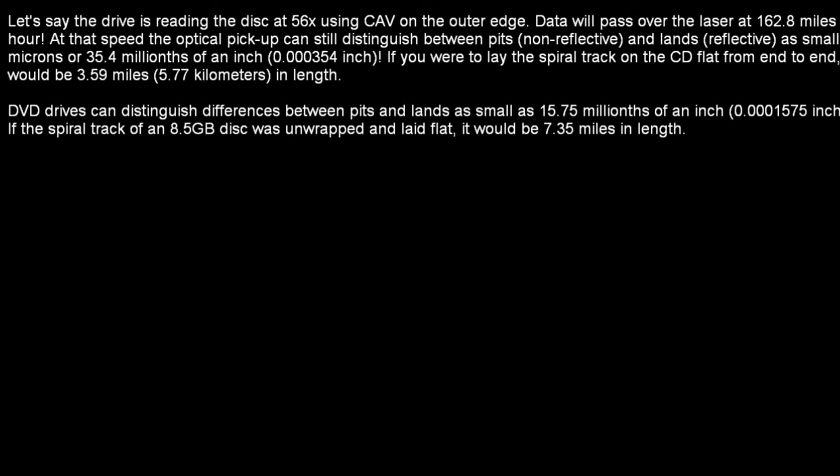Look at DVDs for an example. DVDs can be so accurate that they can distinguish between pits and lands as small as 15 and three-quarter millionths of an inch. And if you were to take a DVD with an 8.5 gigabyte capacity and unwrap that spiral track and lay it flat, it would stretch seven and one-third miles in length. It's interesting, isn't it?